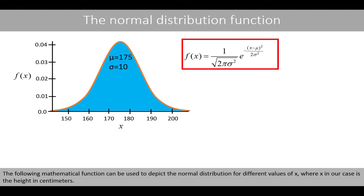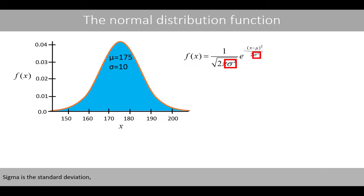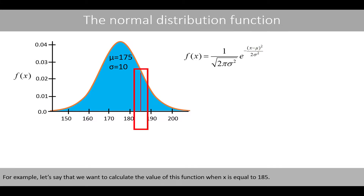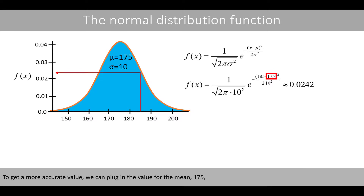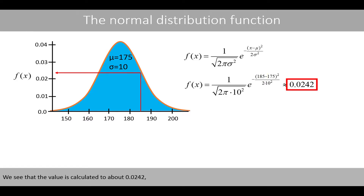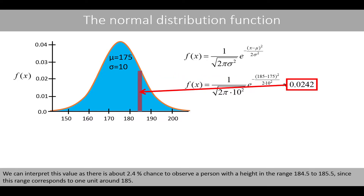The following mathematical function can be used to depict the normal distribution for different values of x, where x in our case is the height in centimeters. Sigma is the standard deviation and mu is the mean. For example, if we want to calculate the value of this function when x equals 185, it seems like the value should be about 0.024. To get a more accurate value, we plug in the mean of 175, the standard deviation of 10, and x equals 185. The value is calculated to about 0.0242, which corresponds to the height of the curve at x equals 185. We can interpret this as about a 2.4% chance of observing a person with a height in the range of 184.5 to 185.5, since this range corresponds to one unit around 185.